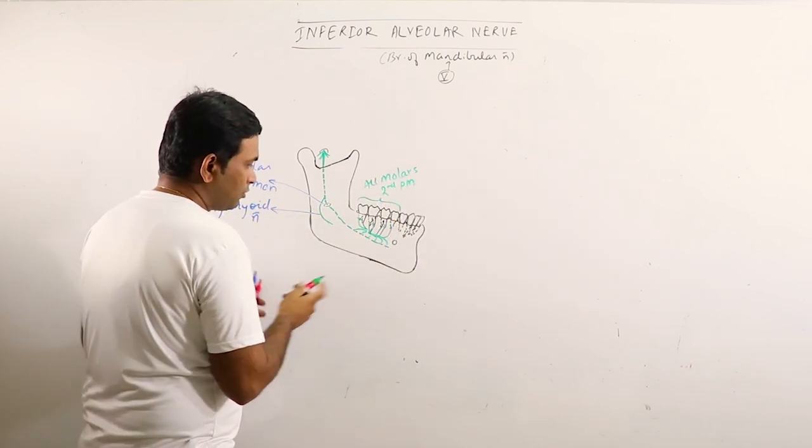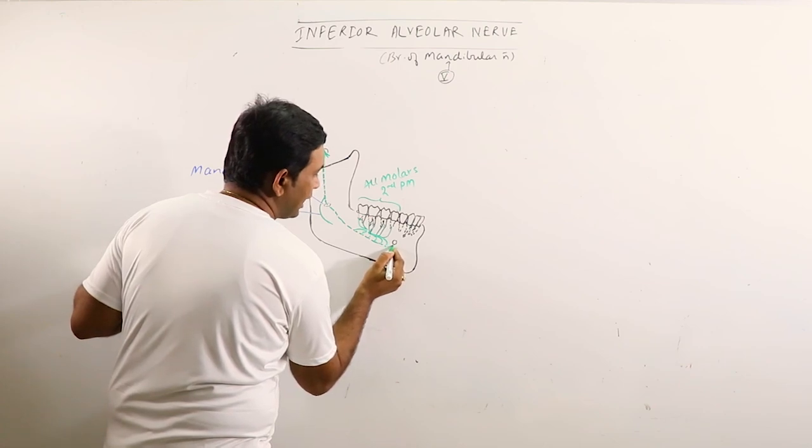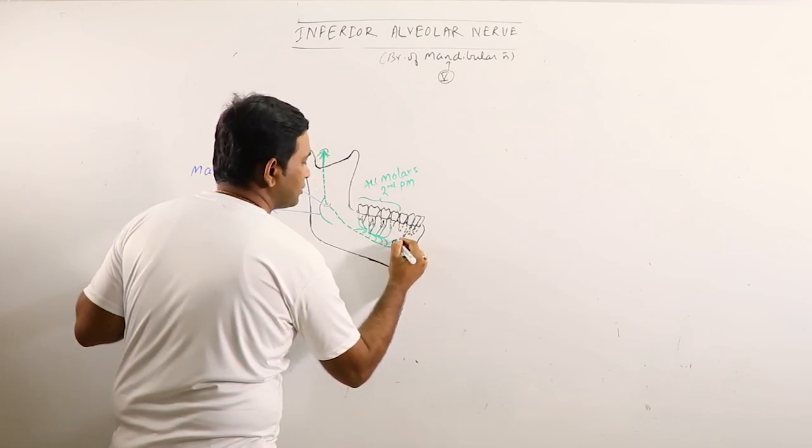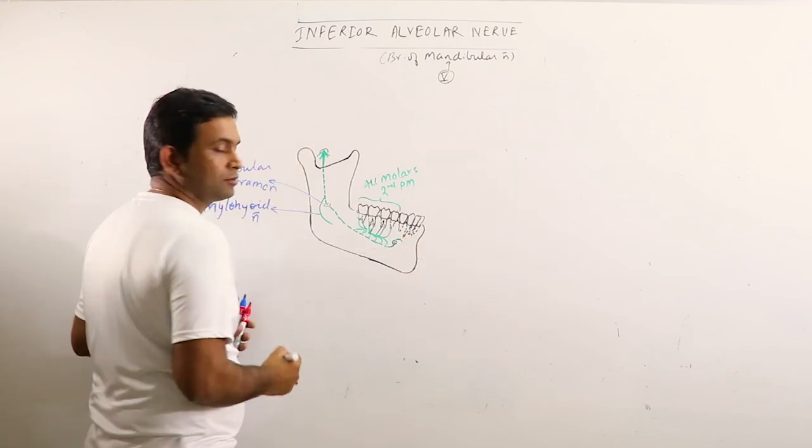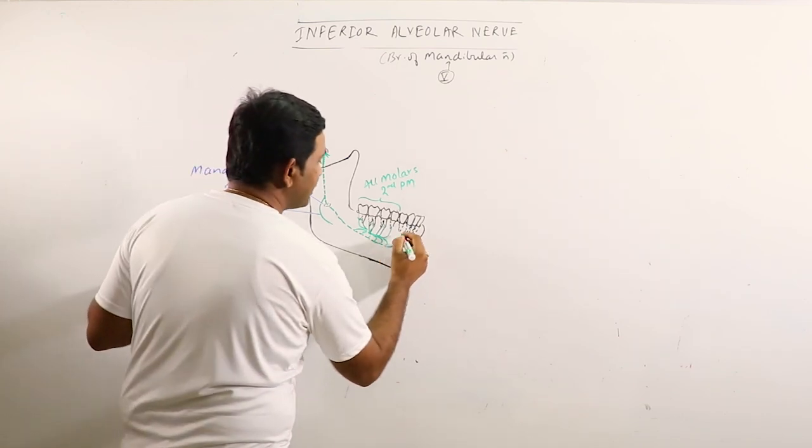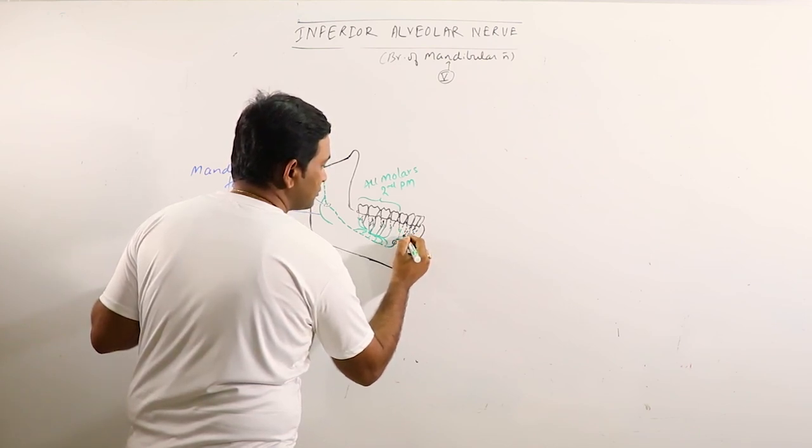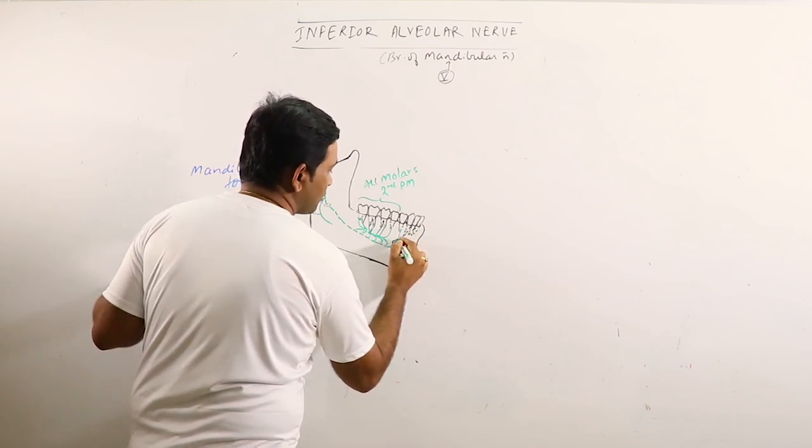Now, it enters the mental foramen and emerges out as the mental nerve which supplies the first premolar and the chin.